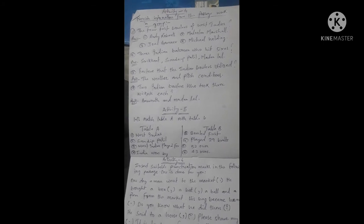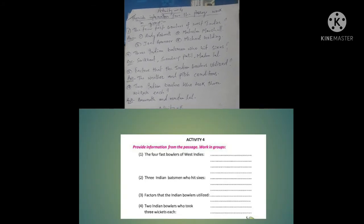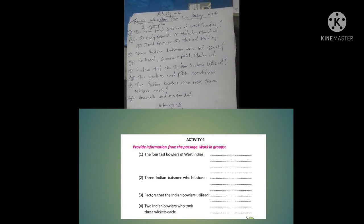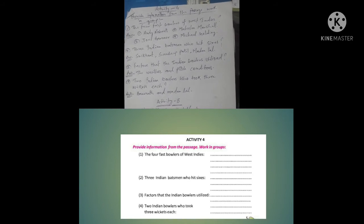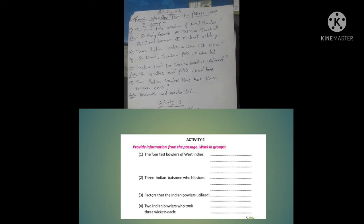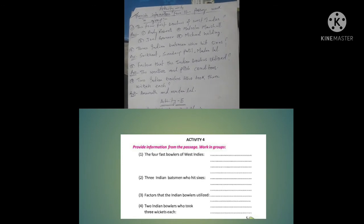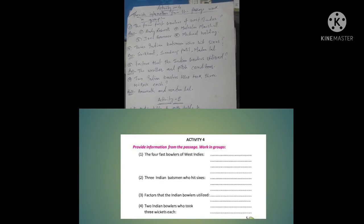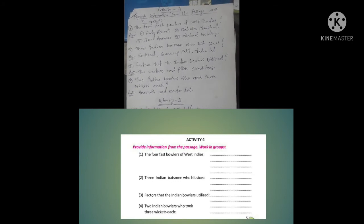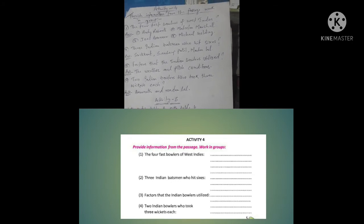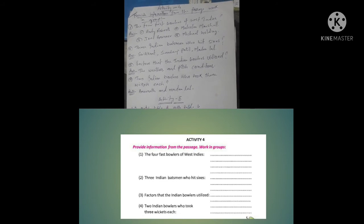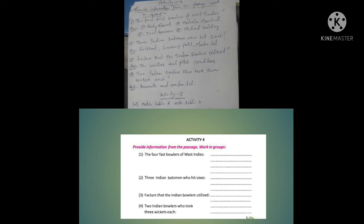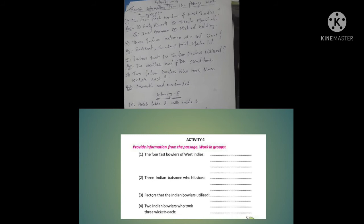Activity 4: Provide information from the passage. Work in groups. Number 1: The four fast bowlers of West Indies - Answer: Andy Roberts, Michael Marshall, Joel Garner, Michael Holding. Number 2: Indian batsmen who hit sixes - Answer: Srikant, Sandip Patil, Madan Lal. Number 3: Factors that the Indian bowlers utilized - Answer: The weather and pitch conditions. Number 4: Two Indian bowlers who took three wickets each - Answer: Amarnath and Madan Lal.